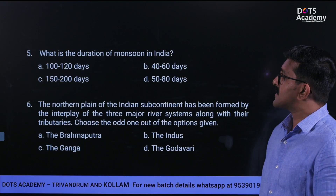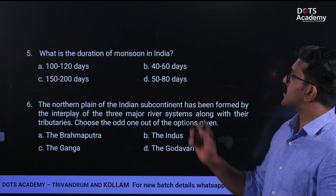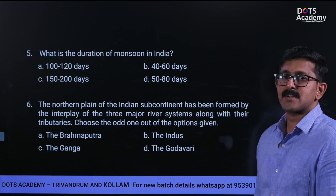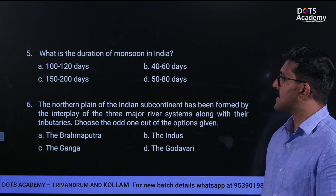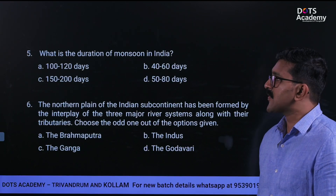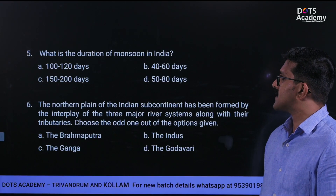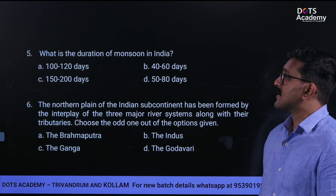What is the duration of monsoon in India? Options: A) 100 to 120 days, B) 40 to 60 days, C) 150 to 200 days, D) 50 to 80 days.